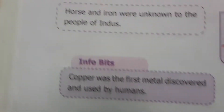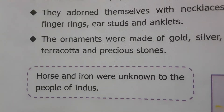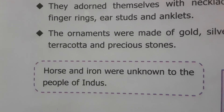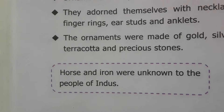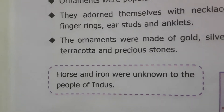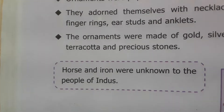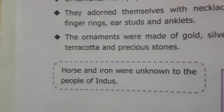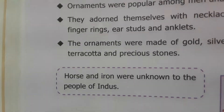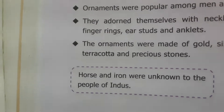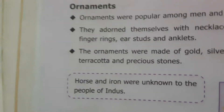Horse and iron were unknown to the people of Indus. In some exams they may ask: which animal was unknown to the people of Indus - options like dog, elephant, horse - the answer is horse. So if asked which animal is unknown to the Indus people, the answer is horse.